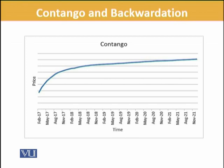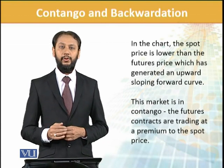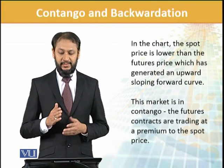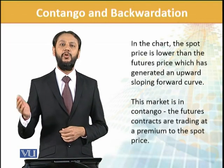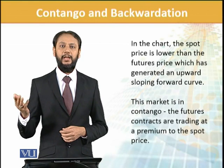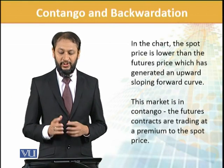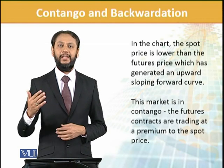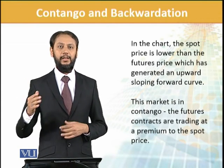From the graph you can see where prices are in February and where they are in November — they are expected to rise. This situation is contango. Contango refers to a situation when future prices are expected to be high. Spot prices are lower than the future price, which generates an upward sloping curve. The market is in contango — your futures are trading at a premium to spot; the future price is higher than the spot price.